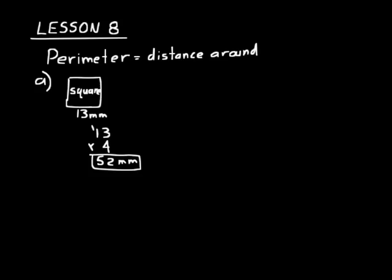If you're still confused about perimeter, remember it means distance around. See this red dot drawn on the bottom right corner of that square? Let's travel around the square: we go up 13 millimeters, then another 13 gives us 26, another 13 is 39, and then the final 13 back to the dot. We've traveled around the perimeter of that square and we've traveled 52 millimeters.